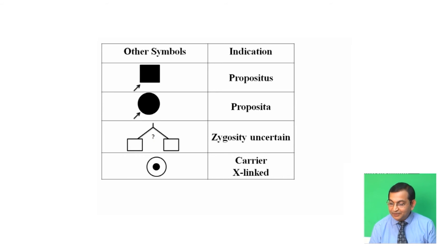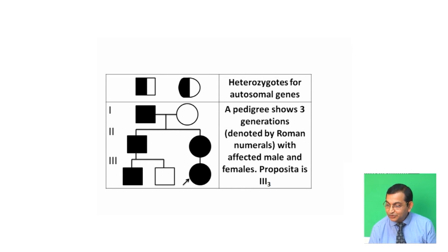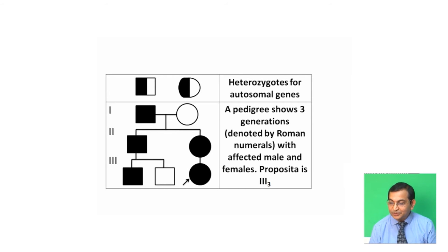Zygosity uncertain and carrier X-linked symbols are also used. In the case of heterozygotes for autosomal genes, the symbol is also partially shaded in the square or circle.